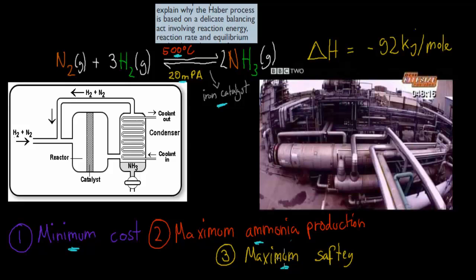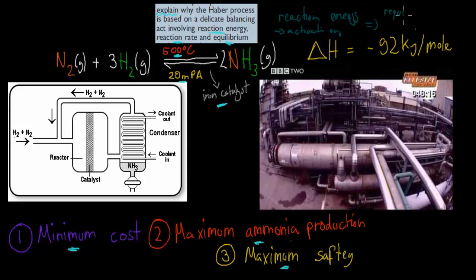The exam point says: explain why the Haber process is based on a delicate balancing act involving reaction energy, reaction rate, and equilibrium. Reaction energy is a bit like activation energy — it's the energy required to break the bonds in nitrogen and hydrogen and form new bonds to produce ammonia.